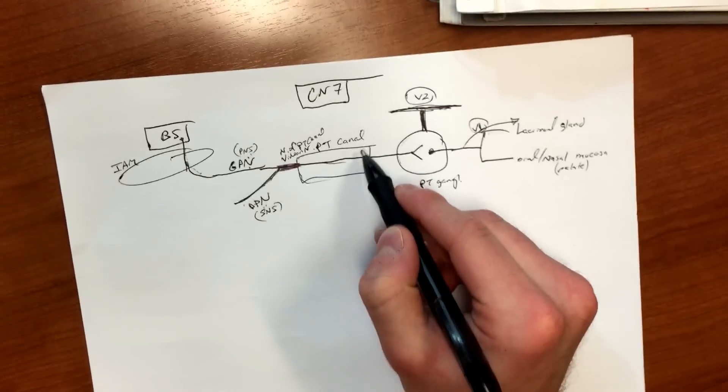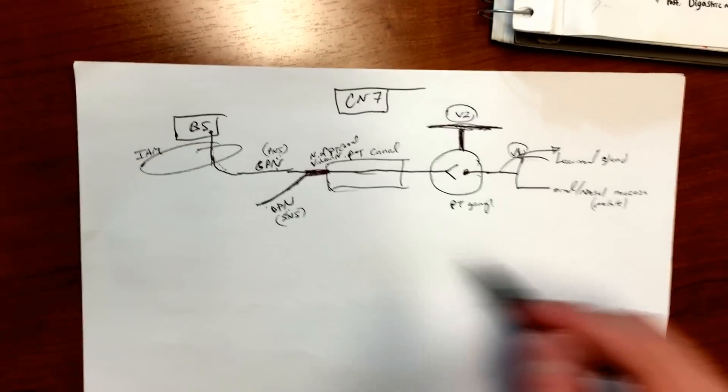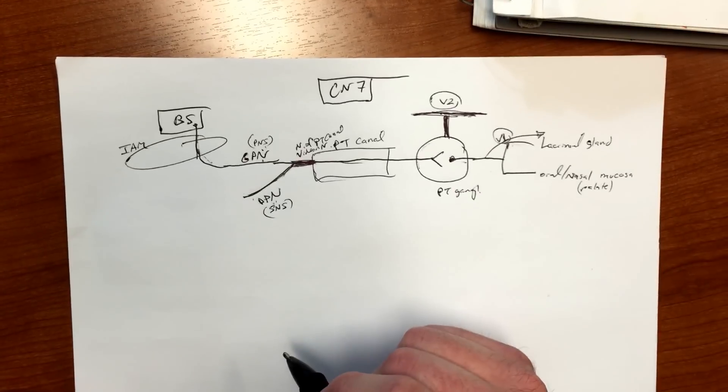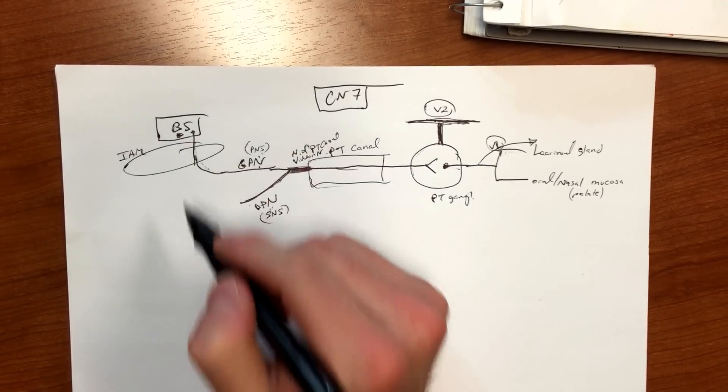Vidian nerve right here is gonna go through the PT canal, which is this area here, and it's gonna pop out. So that's that. We have other fibers coming out - we can do motor fibers.